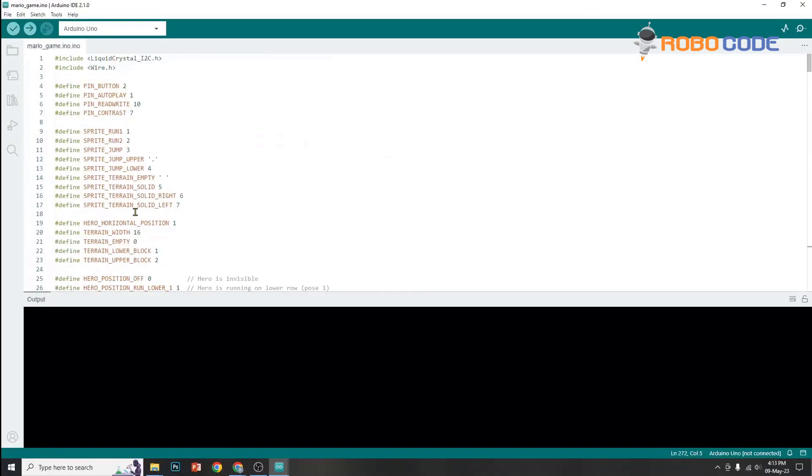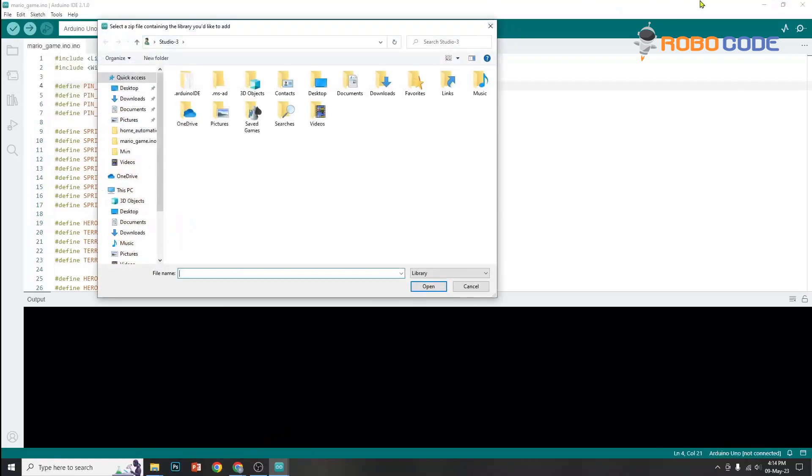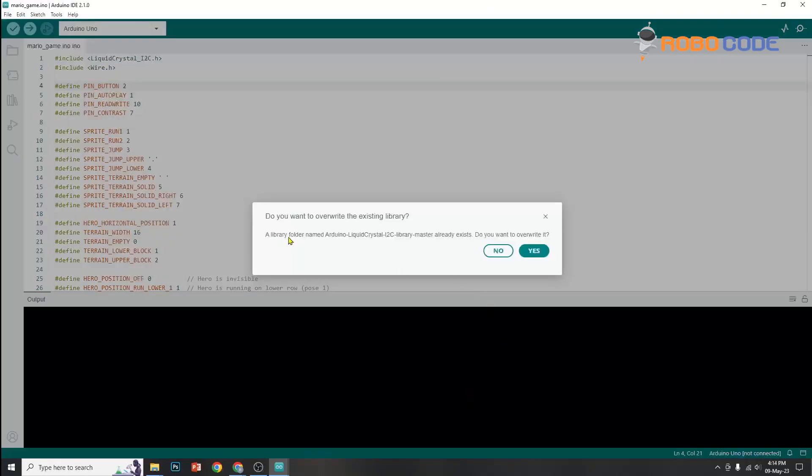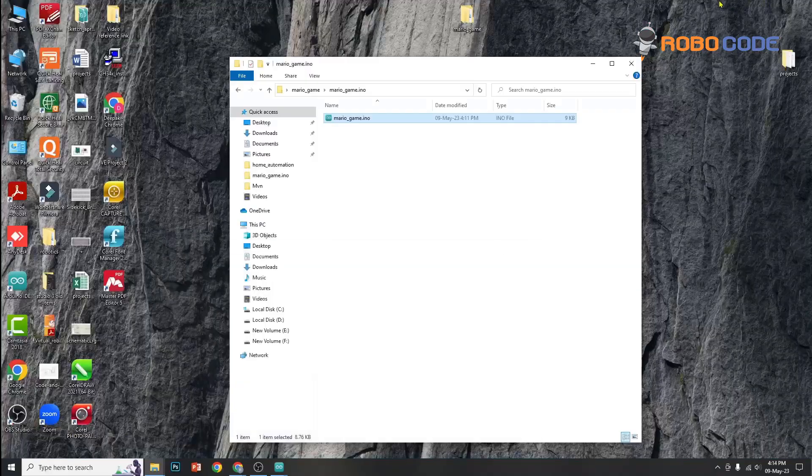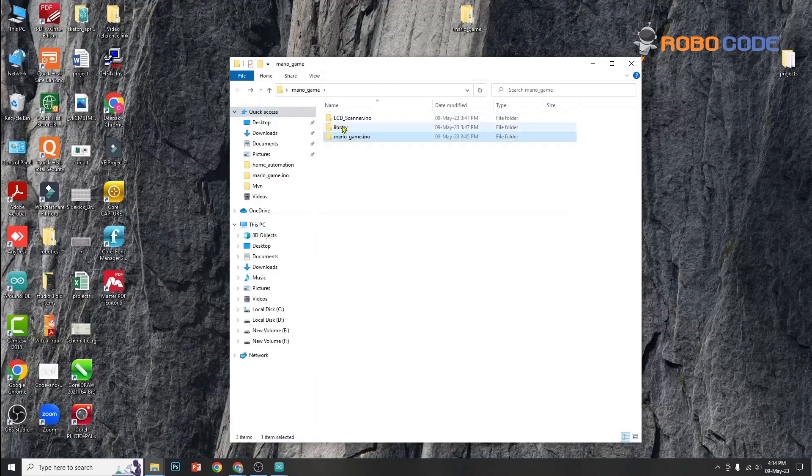Once this is done, we need to install one library called Liquid Crystal. That is also given in this code link. You will locate the library inside the folder and install it by clicking open. If the library is already installed, it will ask you to override. So either you can override or you can ignore it. In our case, we'll ignore it.